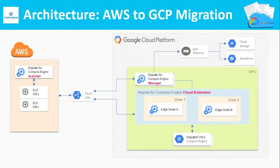This is the same architecture diagram we saw in the last slide, but now it's with respect to AWS and GCP migration alone. Now let us see the step-by-step migration approach that we need to follow in order to migrate VMs from AWS to GCP.